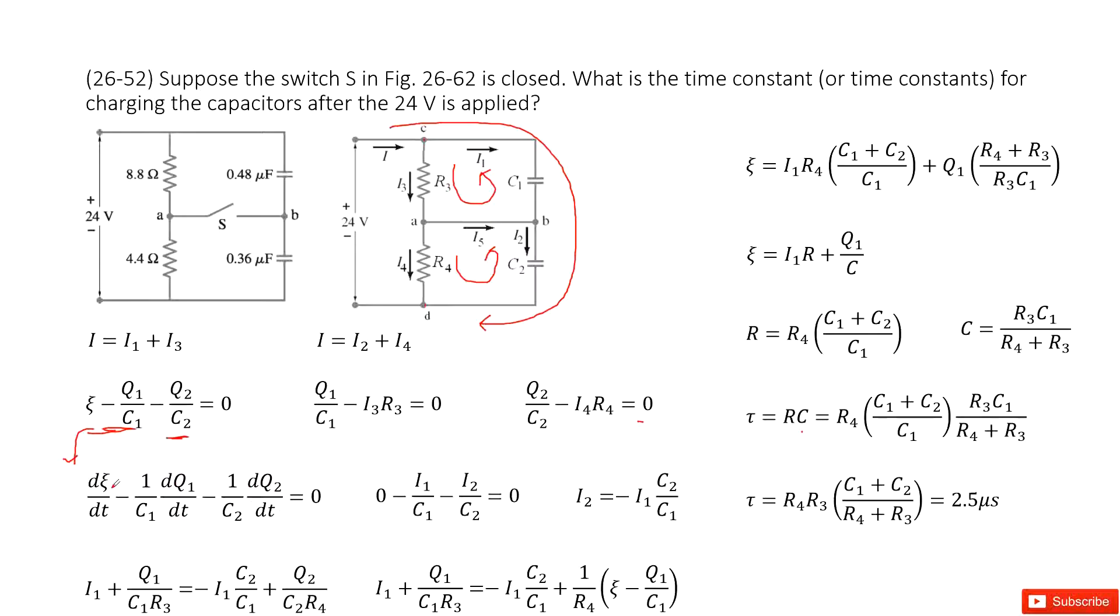As we consider, ε is not changed with time, so this term is zero. And dQ1/dt is I1, dQ2/dt is I2. Now we can solve it.